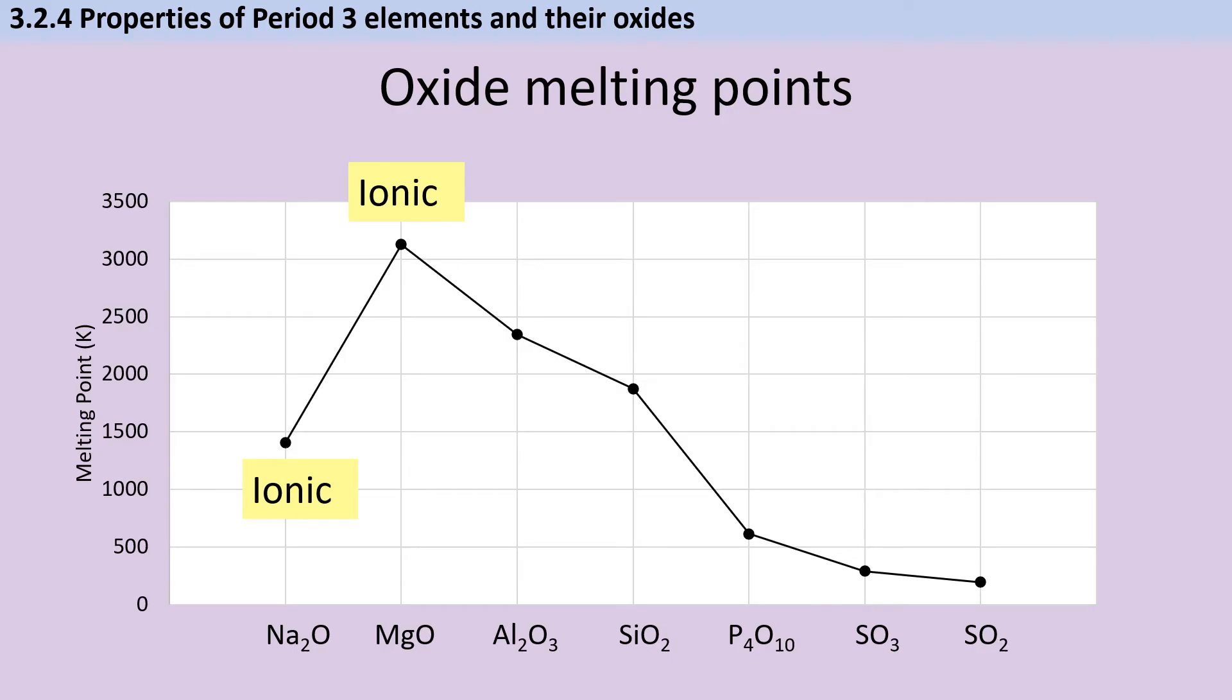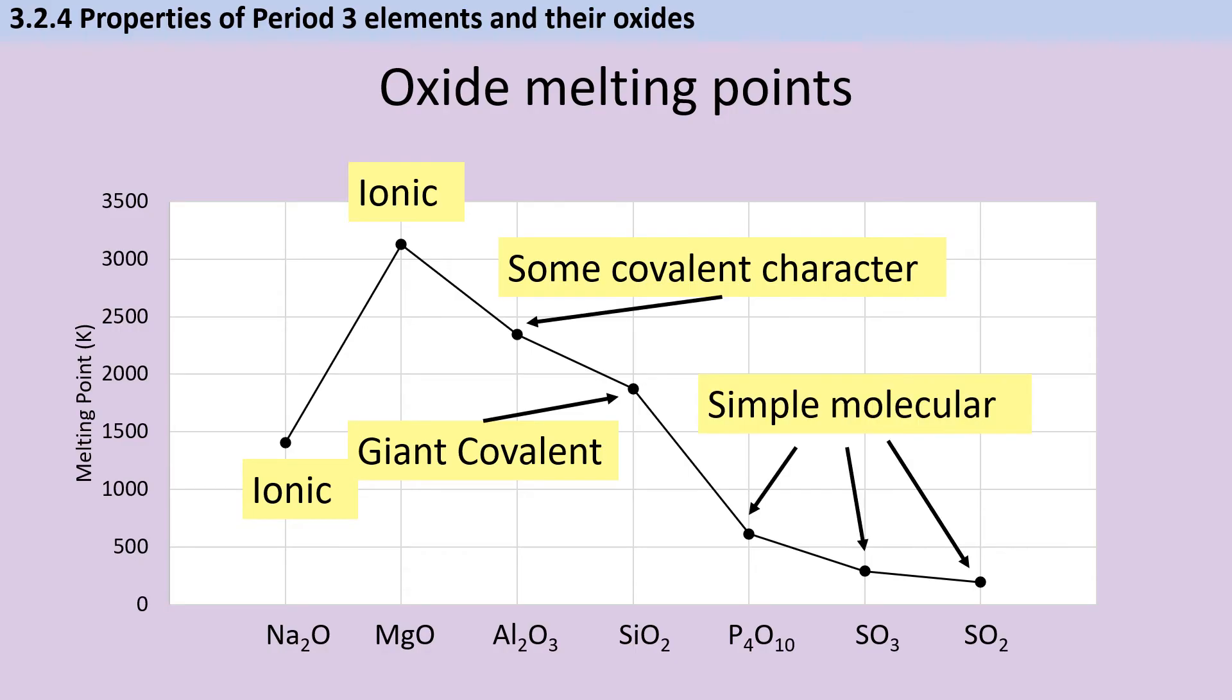Aluminium oxide is ionic but it does show some covalent character, and this can be explained by the electronegativity difference being less big, or alternatively by the small aluminium ion with a high charge being able to get close to the oxide ion and distorting the oxide charge cloud. Silicon dioxide is a giant covalent structure and therefore it has a very high melting point due to the large amount of energy required to break the strong covalent bonds. And then our final three oxides are simple molecular structures with much lower melting points because it's only the weak van der Waals forces between the molecules that need to be overcome, not strong covalent bonds.